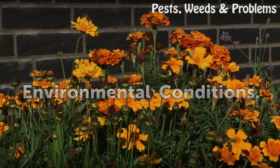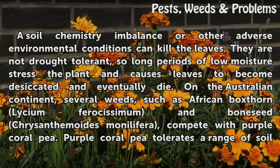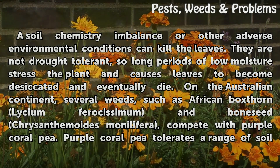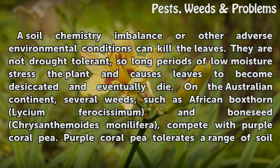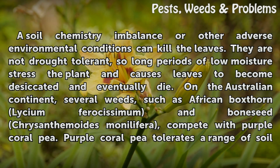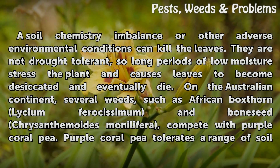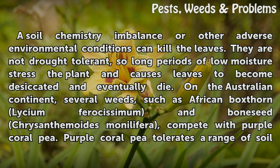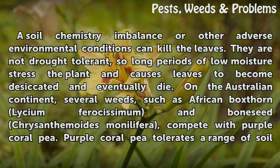Environmental conditions. A soil chemistry imbalance or other adverse environmental conditions can kill the leaves. Purple coral pea is not drought tolerant, so long periods of low moisture stress the plant and cause leaves to become desiccated and eventually die. On the Australian continent, several weeds, such as African boxthorn and bone seed, compete with purple coral pea.